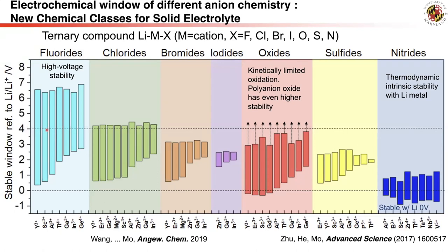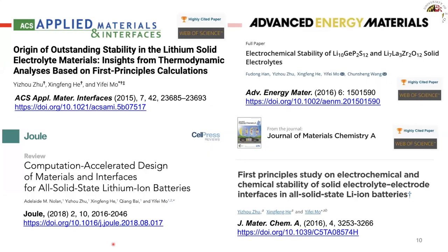Using the computation method illustrated here, we can quickly evaluate the thermodynamic stability window of a wide range of materials, helping to identify stability trends across different cations and anions. Some materials that are thermodynamically intrinsically stable with lithium metal are identified and discussed in other papers. More details on computation and experiments can be found in our papers and our review paper in Joule.